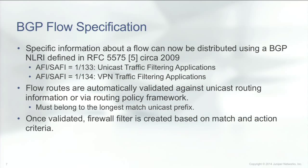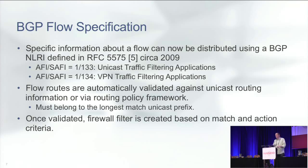So enter BGP flow spec. This is an RFC that's been around now for about five or going on six years. It is an IETF standard. We define new BGP AFI and SAFI, new NLRIs, for advertising information about the attack to our routers. BGP flow spec has this idea of validating the routes against the unicast routing table to make sure that someone's not advertising a route black hole that they don't own — that they're not already advertising to you as a service provider via unicast BGP. Once that's validated, those BGP routes are actually turned into an access list or a firewall filter to take whatever action you have specified.